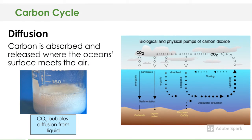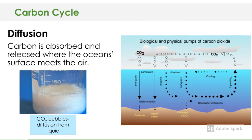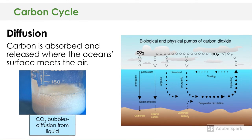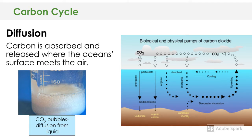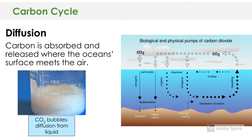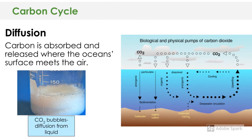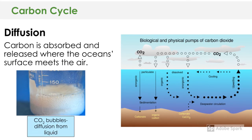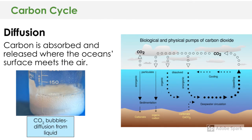Diffusion is when carbon is absorbed and released by the ocean's surface, specifically where it meets the air. Carbon dioxide bubbles diffuse from the liquid up into the atmosphere. When there's an excess amount of carbon dioxide in the atmosphere, it gets dissolved into the waters of the ocean.